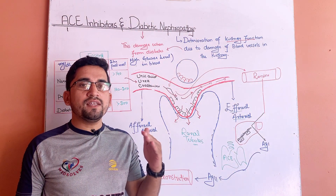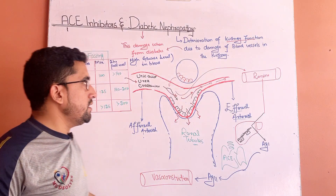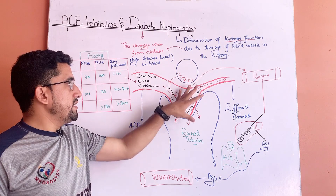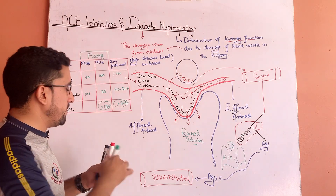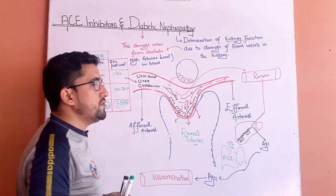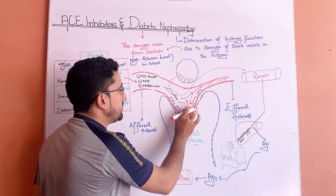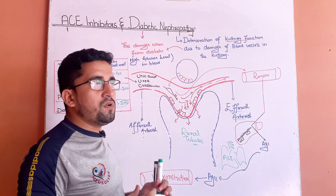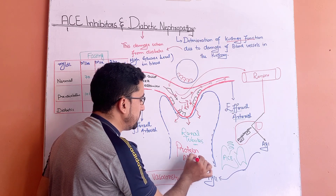Let me discuss what happens when high glucose levels damage these blood vessels present in the kidney. Under normal glucose levels, they do not produce enough pressure to damage this area. But when glucose levels become too high and pass through this area, they produce high pressure, and the kidneys do not tolerate this high pressure. As a result, the pores present in this area become enlarged, and important materials such as proteins and albumins also come out through these pores.